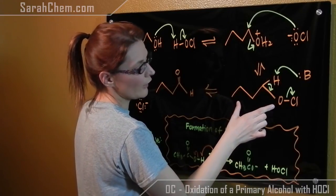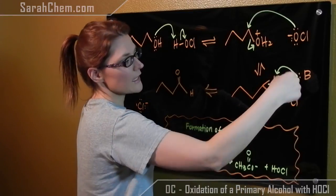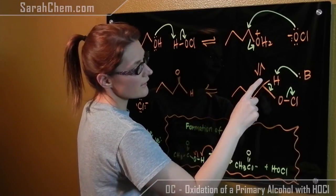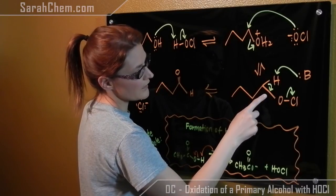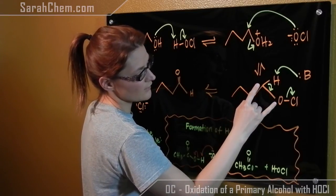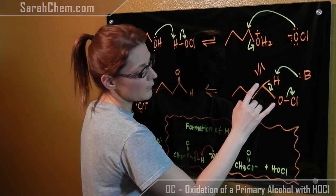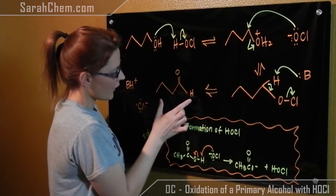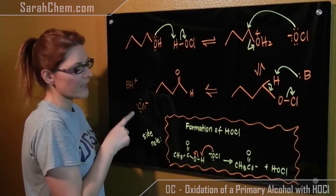In the next step, in order to create our aldehyde, some unspecified base will come and attack this hydrogen. These electrons will then shift down to form a double bond between this carbon and this oxygen. The formation of this double bond will precipitate the departure of this chloride group. So what we get is our aldehyde, a protonated base, and our chloride.